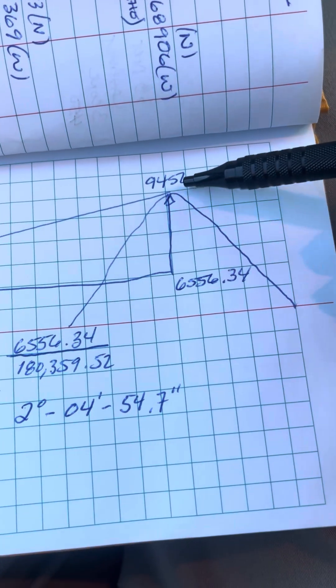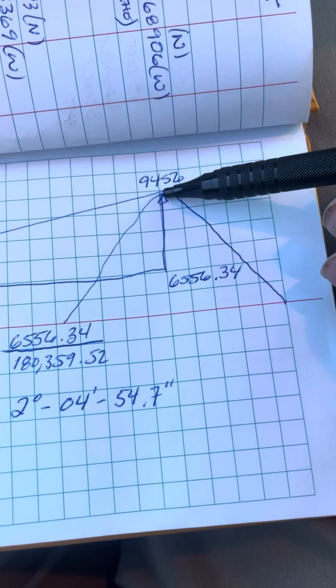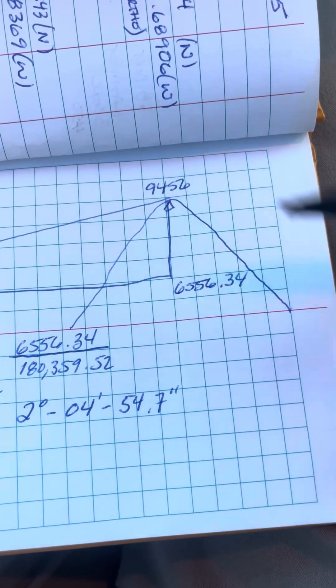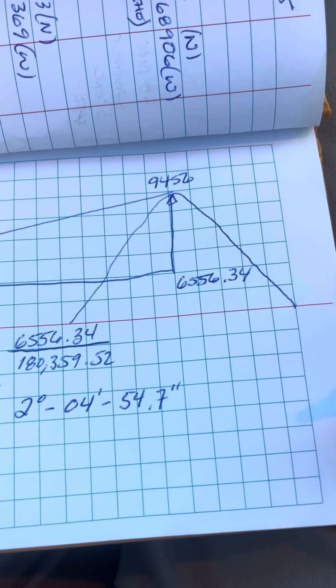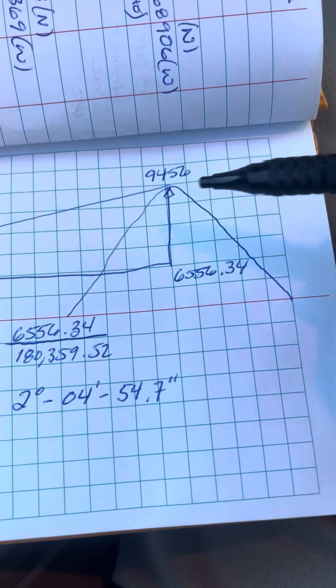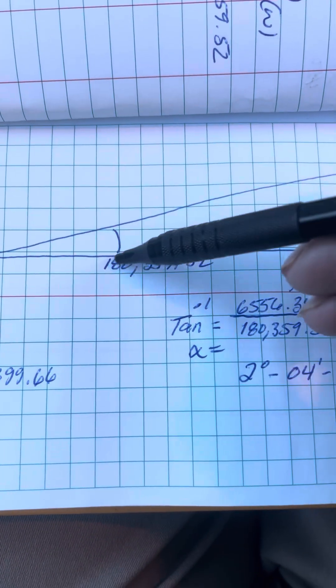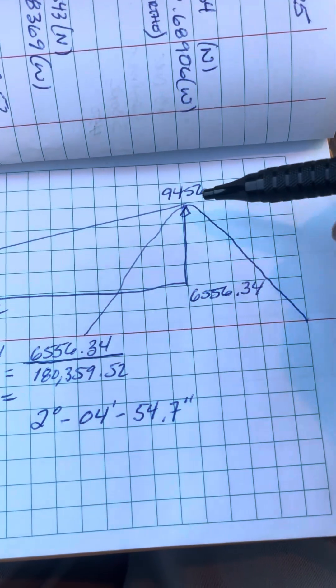This over here is Mount Wrightson. I'll be sighting up to the summit which is a little bit above that marker that's up there. Mount Wrightson has an elevation of 9,456 feet. Then what I want to do is I want to find this side of the triangle because ultimately I want this elevation angle here.